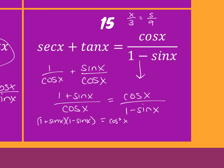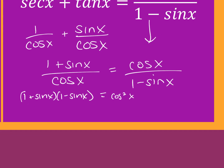What happens with one plus sine and one minus sine? Difference of two squares — one minus sine squared of x. And then one minus sine squared of x becomes cosine squared of x. I probably would have started with the right side though.